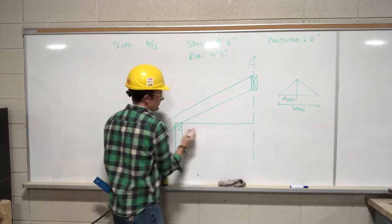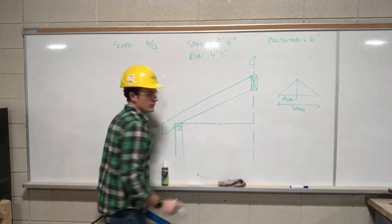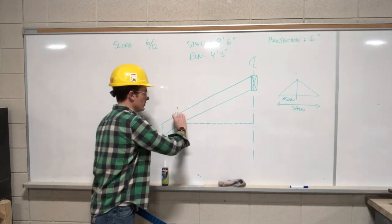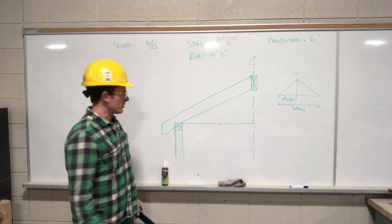That's the center line of the building. This dotted line right there is where the bottom of the ceiling joist would be if we had a ceiling joist in there to put across.